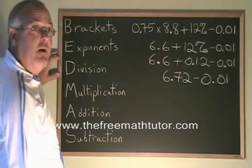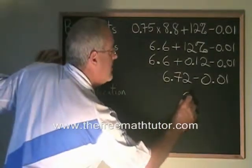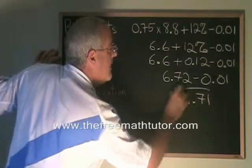6.72 minus 0.01 is equal to 6.71. That's my answer.